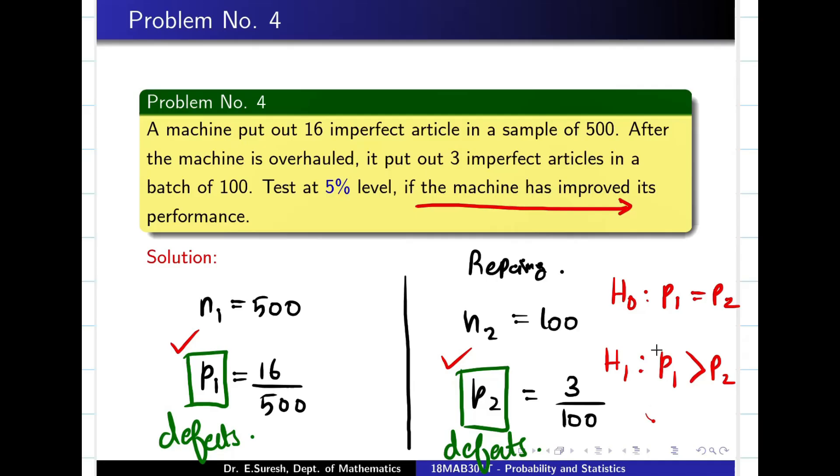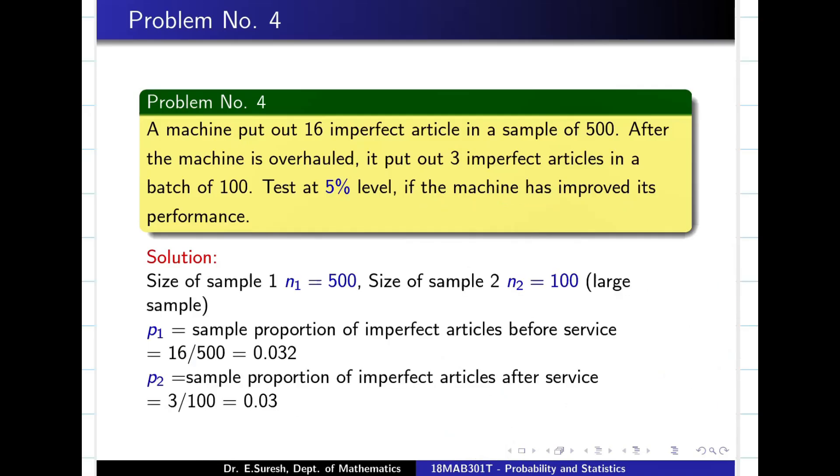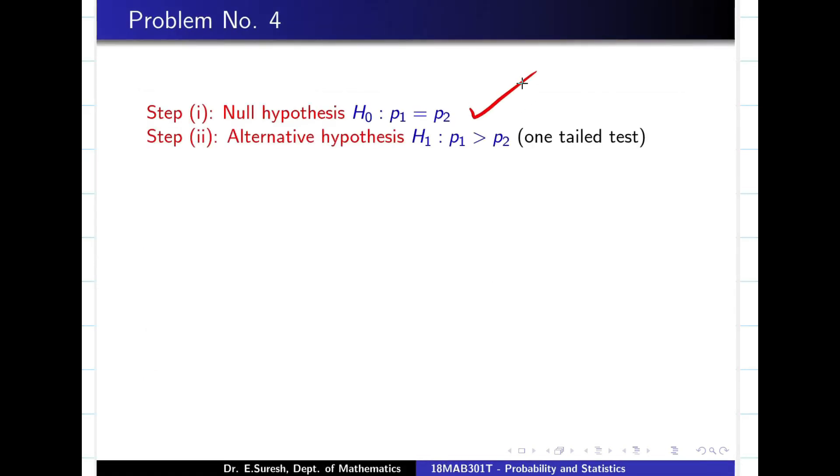P1 is the proportion of defect before overhauling. P2 is the proportion of defect after overhauling. So P2 defect should be less than P1. That is what N1, N2, P1, P2 we have calculated. Now my H0 is P1 equal to P2. H1 is P1 greater than P2, reason: defect in P1 is more than the defect proportion. We are not dealing with performance. Even though the question is asked for performance, the data is given for defect. So I have to write like this.